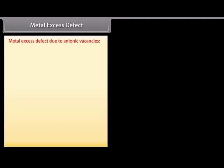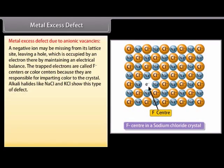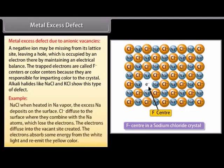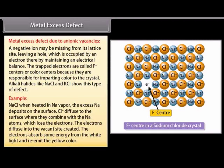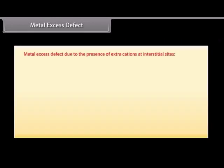Metal excess defect due to anionic vacancies: A negative ion may be missing from its lattice site, leaving a hole which is occupied by an electron, thereby maintaining electrical balance. The trapped electrons are called F-centers or color centers, because they are responsible for imparting color to the crystal. Alkali halides like NaCl and KCl show this type of defect. For example, when NaCl is heated in sodium vapor, excess sodium deposits on the surface; Cl⁻ ions diffuse to the surface where they combine with Na atoms, which lose electrons. The electrons diffuse into the vacant sites and absorb some energy from white light, re-emitting yellow color.